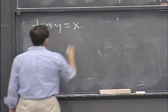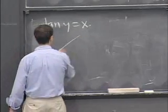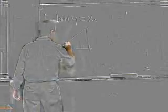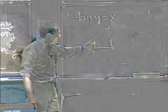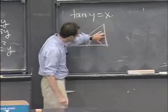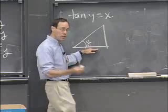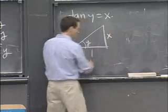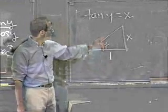So tan y equals x can be encoded in a right triangle in the following way. Here's the right triangle. And tan y means that y should be represented as an angle. And then its tangent is the ratio of this vertical to this horizontal side. So I'm just going to pick two values that work, namely x and 1. Those are the simplest ones. So I've encoded this equation in this picture.